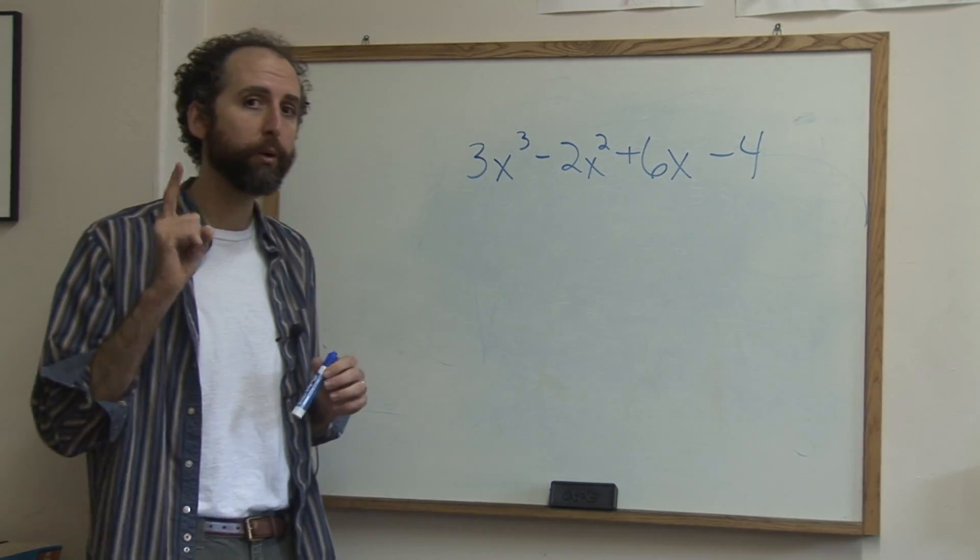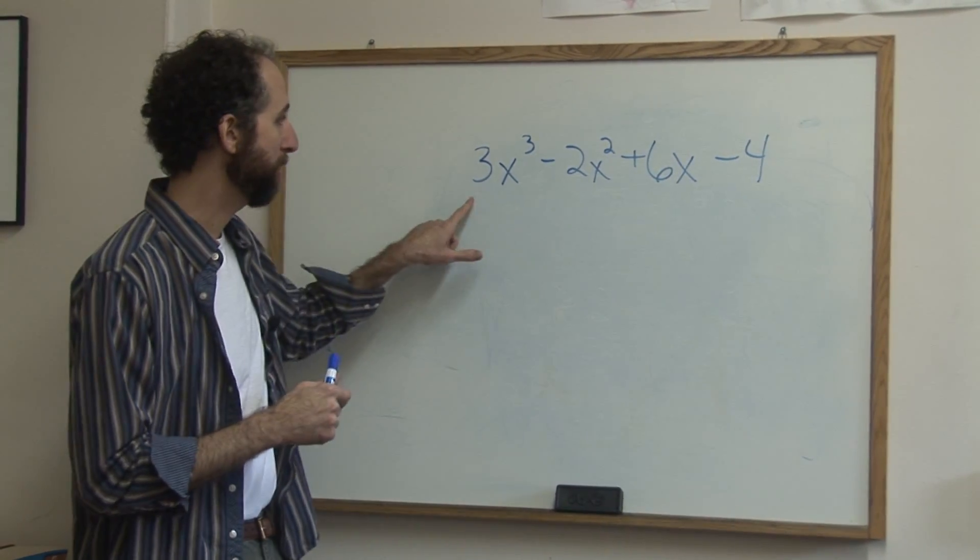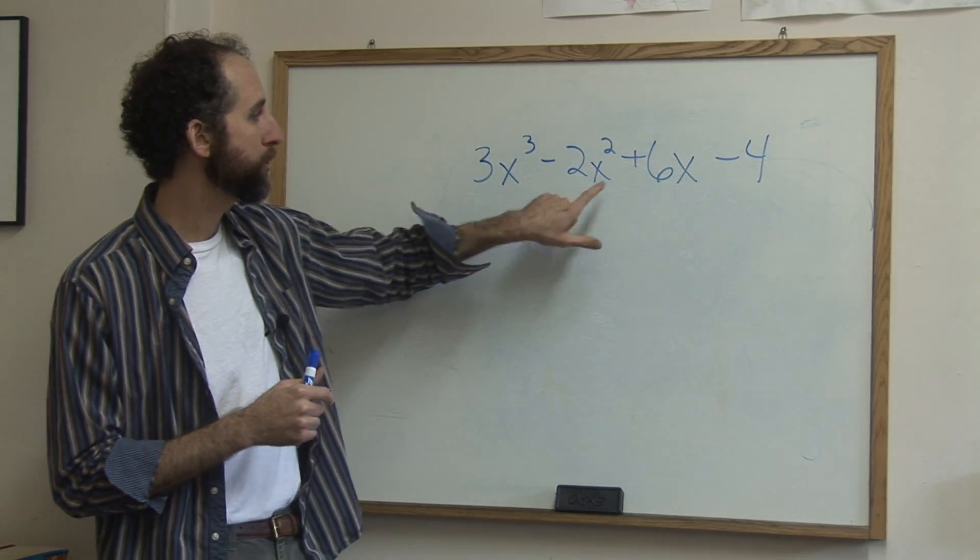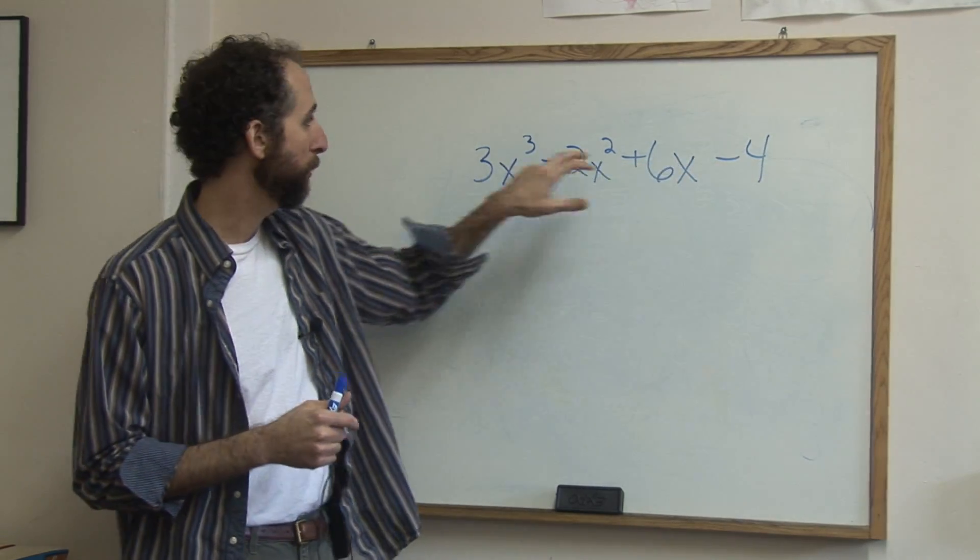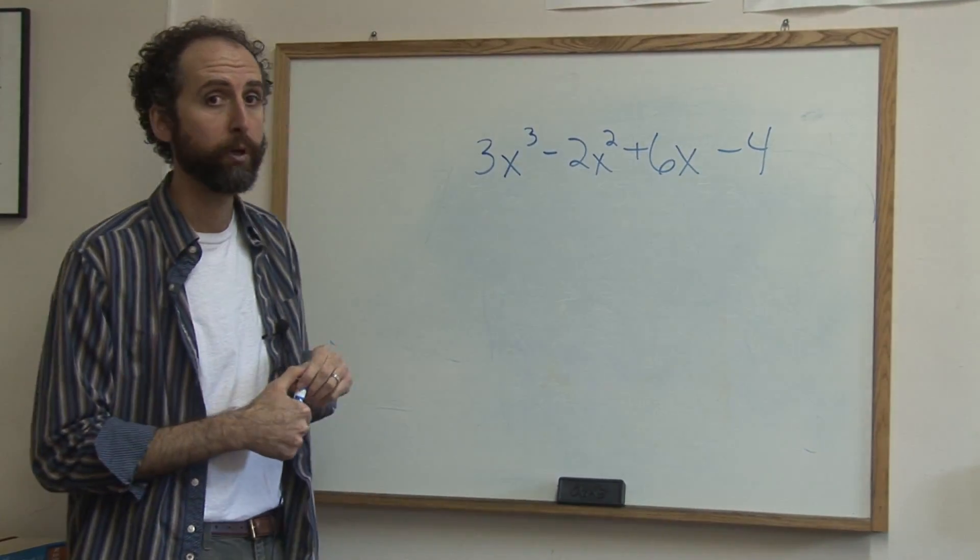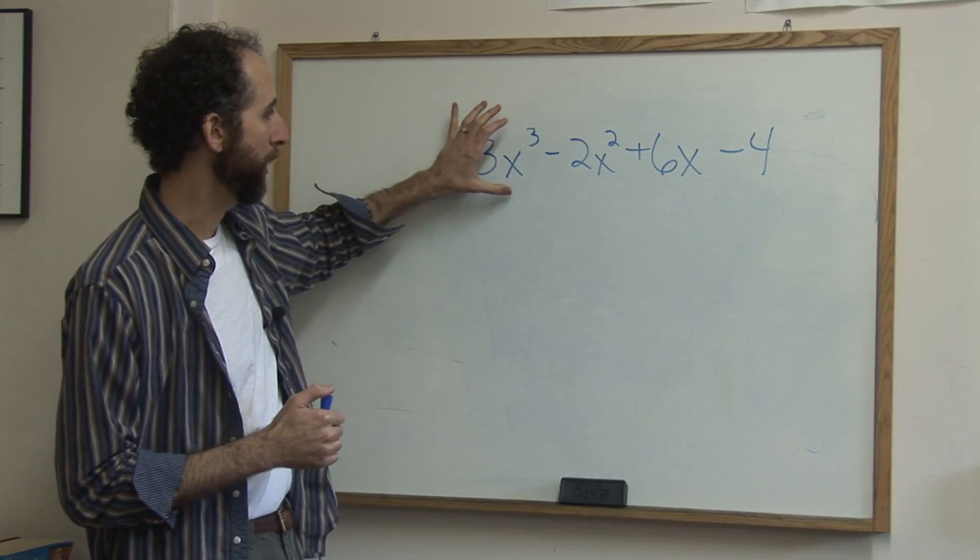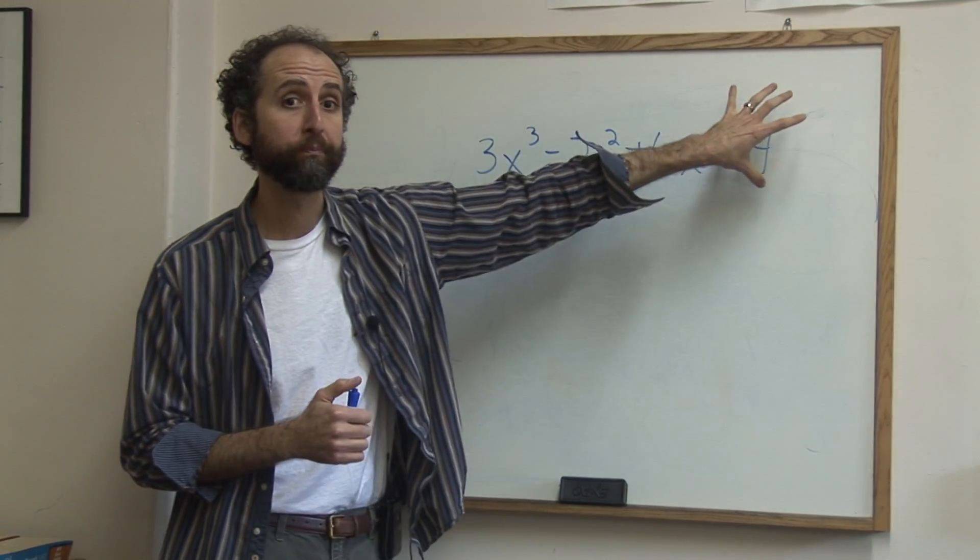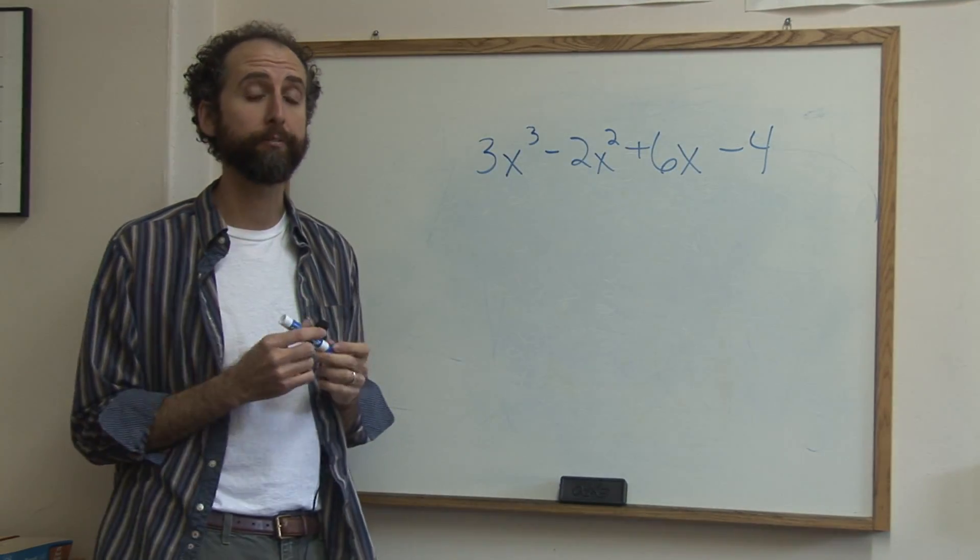Now the trick to factoring by grouping, you can always tell this is what you have to do because you have four terms - one term, two term, three term, four terms - with different exponents, or no exponent, which is zero really. But you have four different terms which we're going to need to factor, and that tells you you're going to factor by grouping.